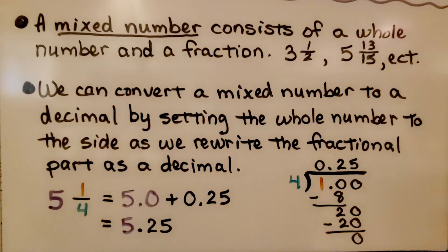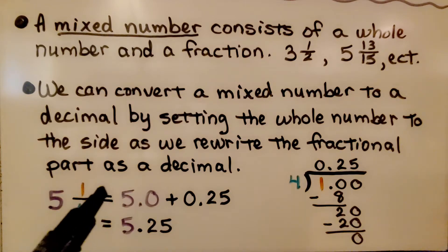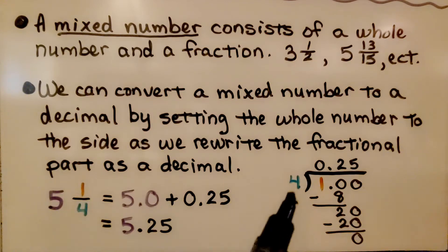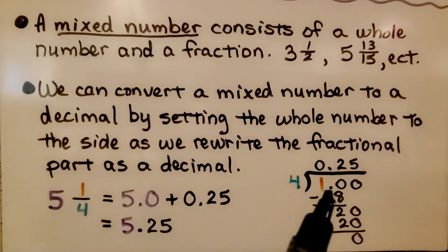We can convert a mixed number to a decimal by setting the whole number to the side as we rewrite the fractional part as a decimal. If we have 5 and 1/4, we set the 5 aside and worry about the 1/4. We do 1 divided by 4. After doing long division, we see that it's 0.25 or 25 hundredths.